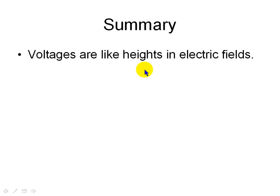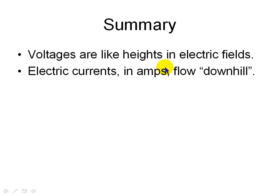Summarizing, voltages are like heights in electric fields. Electric currents in amps, they always flow downhill. Always.